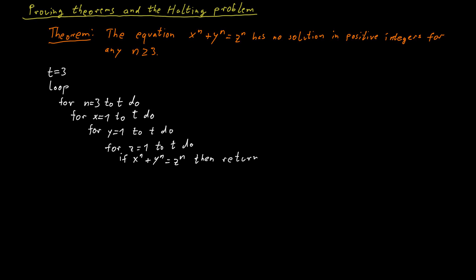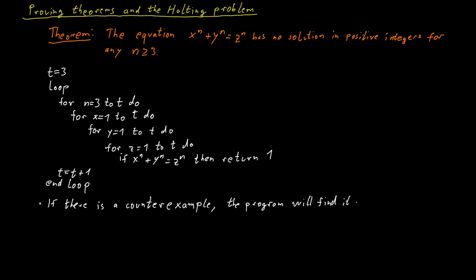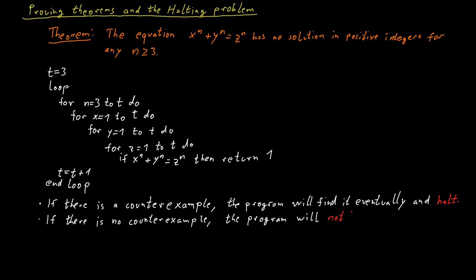If those values satisfy the equation, then we have found a counterexample, so we return 1. If not, then Fermat's Last Theorem holds for all numbers up to t, but maybe t was just not large enough. So we increase t by 1 and go through the loop again. Clearly, if there is a counterexample to Fermat's Last Theorem, this program will eventually find it and return 1. If there is no counterexample, this program will never terminate — it will get stuck in the loop, increasing t indefinitely.